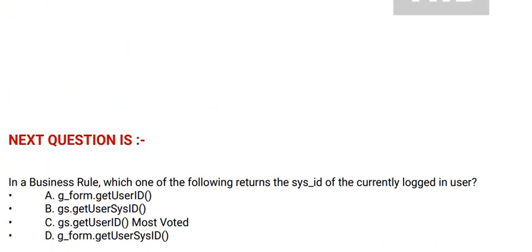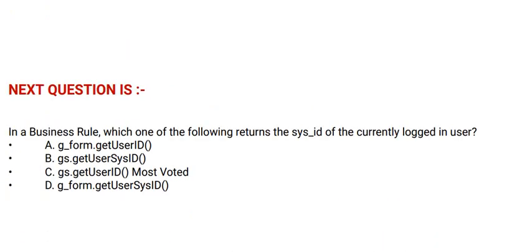Next question: In a business rule, which one of the following returns the sys_id of the currently logged-in user? Option A: g_form.getUserID(). Option B: gs.getUserSysID(). Option C: gs.getUserID(). Option D: g_form.getUserSysID(). The correct answer is Option C.